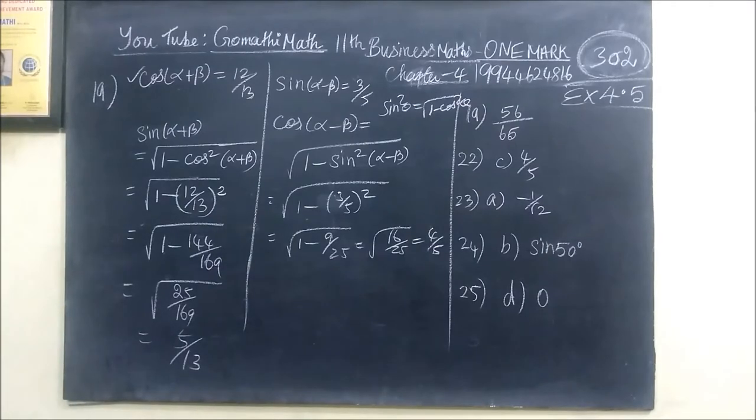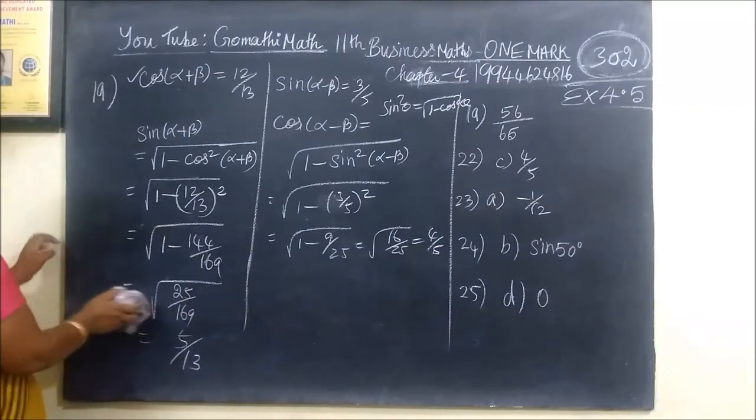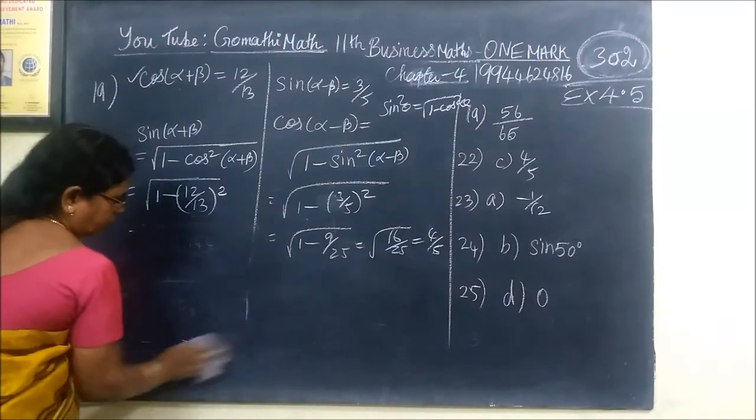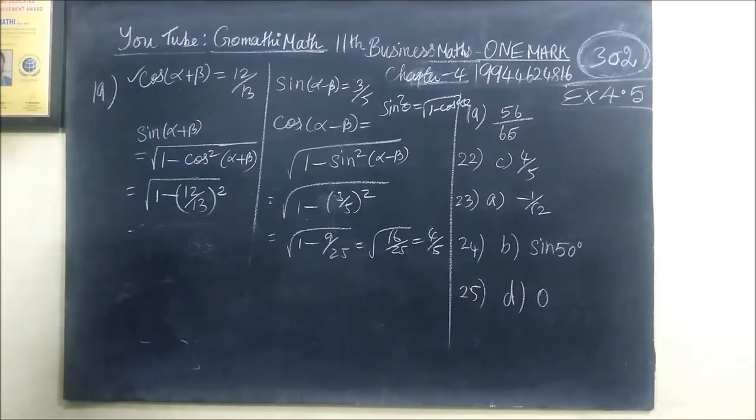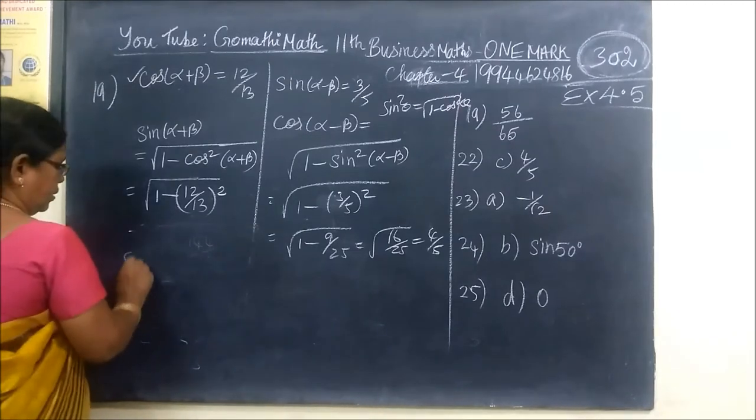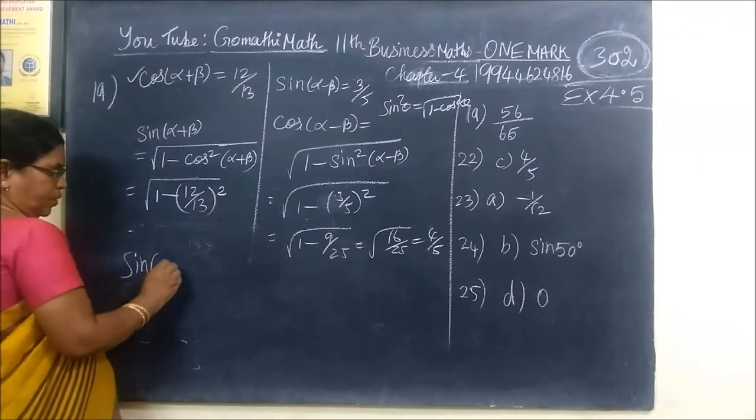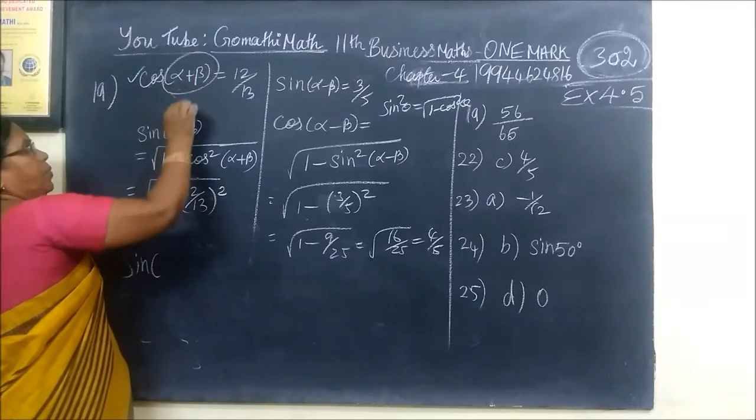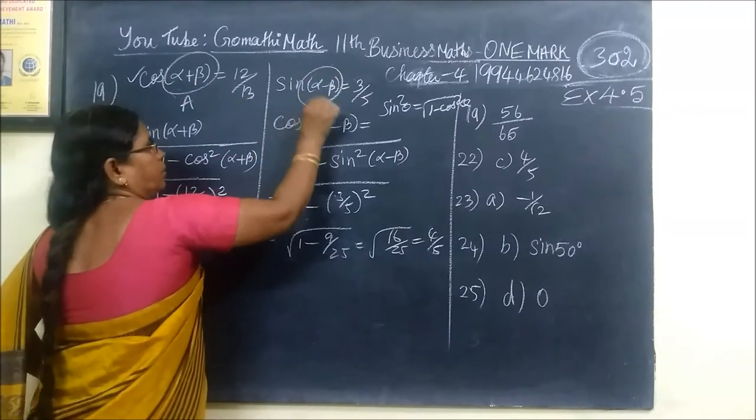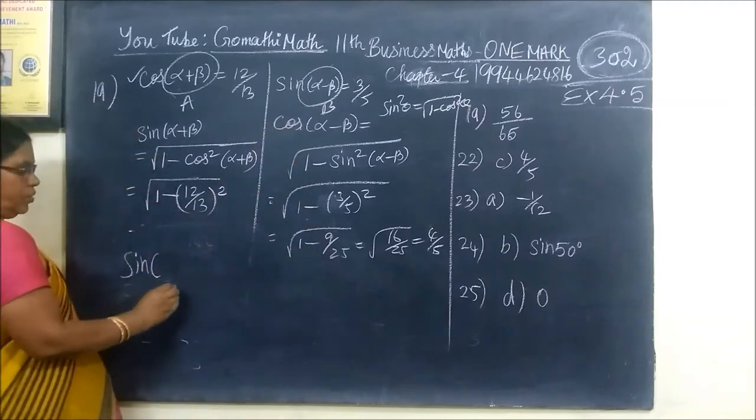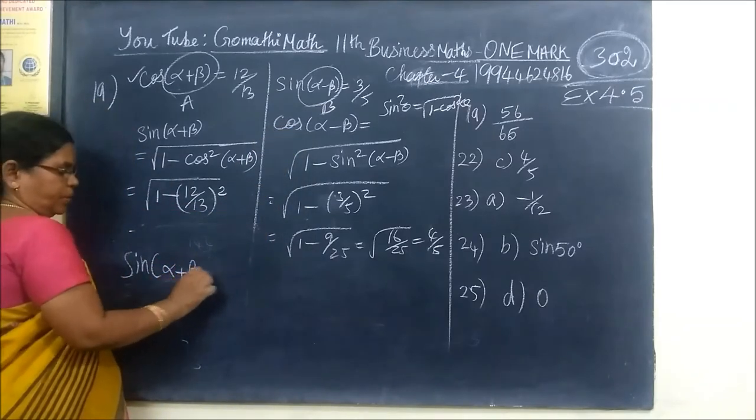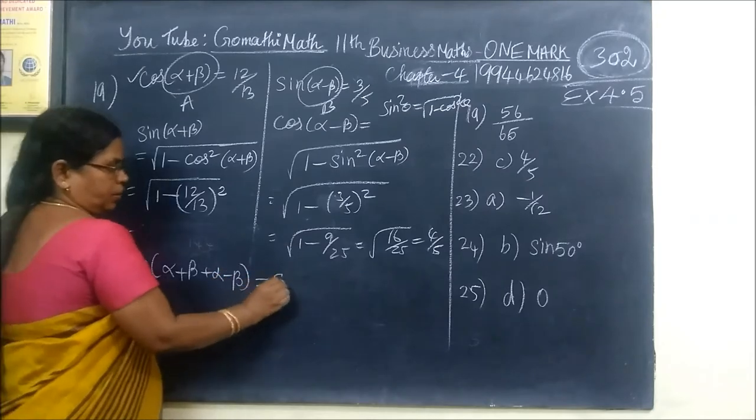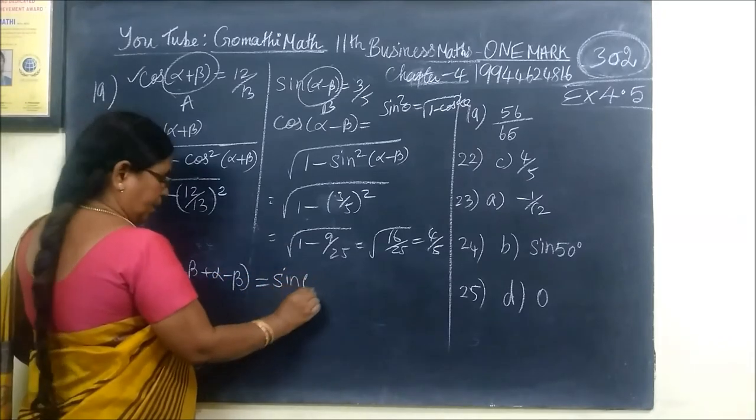Now, what is sin of a plus b? Then the answer is this. Sin of a plus b is the number. What is sin of a plus b? Sin of a plus b equal to sin a cos b plus cos a sin b. A plus b is the number of a plus b. So a plus b equals alpha plus beta, b equals alpha minus beta.